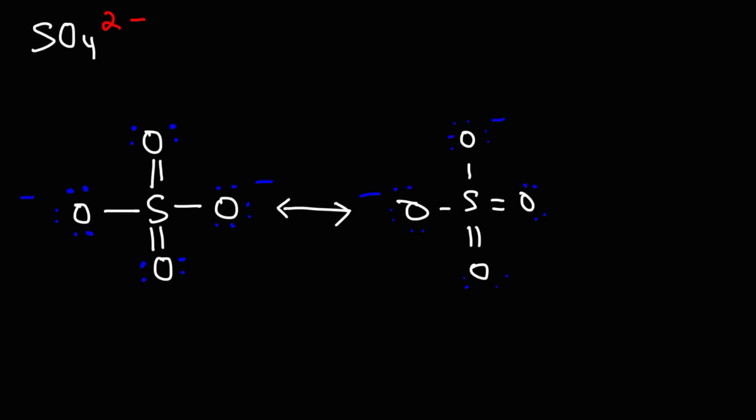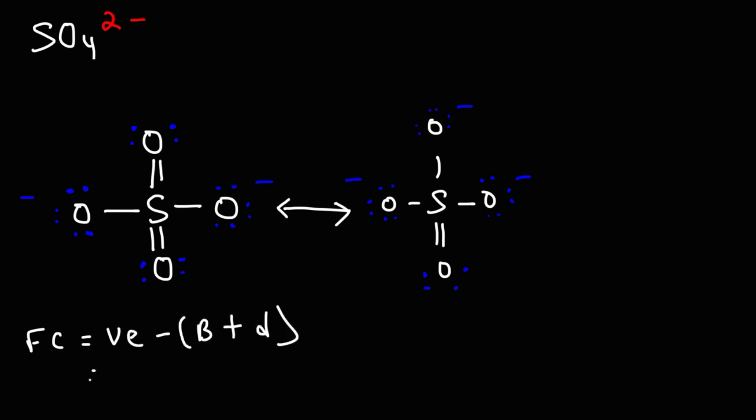But let's draw resonance structures that are not equivalent to each other so we can discuss their relative stability. So what we can do is we can take a lone pair, we can break a pi bond and put a lone pair there. If we do that, we'll get this resonance structure where sulfur has 5 bonds instead of 6. And now we're going to have 3 oxygen atoms with a negative formal charge. Now what will the formal charge on sulfur be? If you recall, the formal charge is equal to the valence electrons minus the number of bonds and dots on that particular atom.